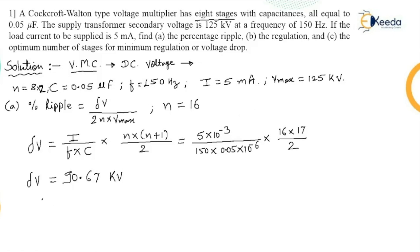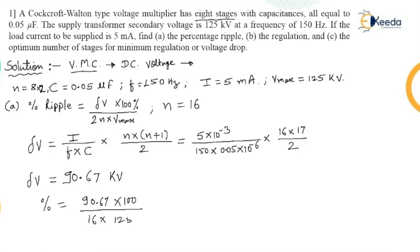Now percentage ripple can be calculated. Percentage ripple equals delta V into 100, divided by 2N into V_max. Delta V is 90.67, multiplied by 100, divided by 16 multiplied by V_max of 125 kilovolt. This comes out to be 4.53 percent. So this is our first value: percentage ripple equals 4.53%.